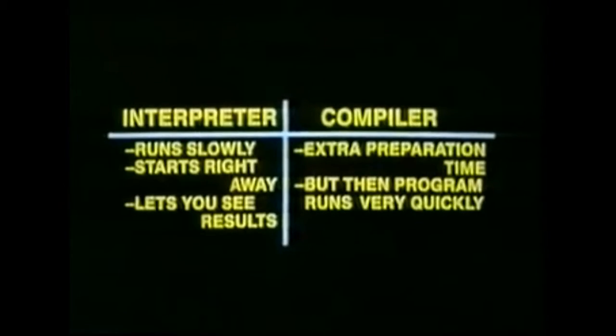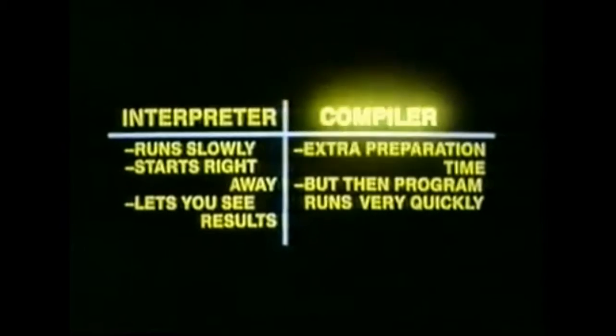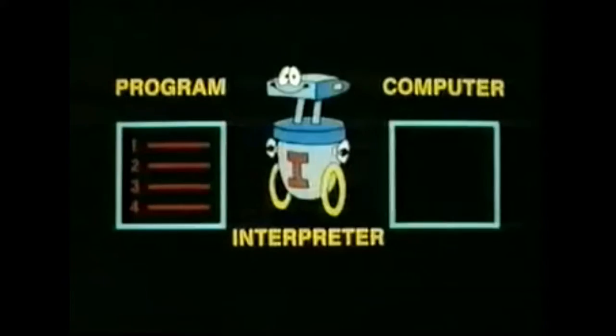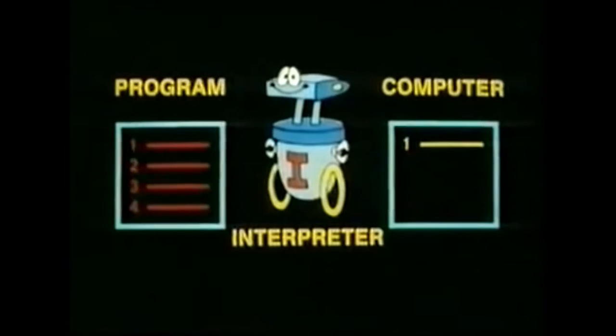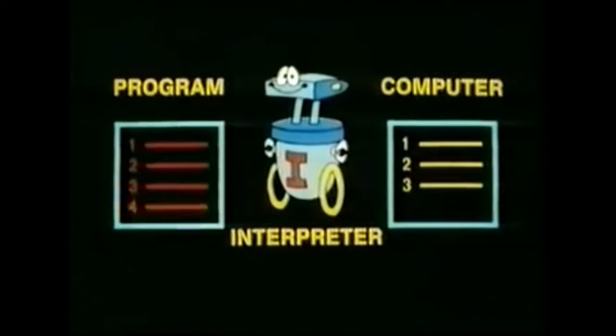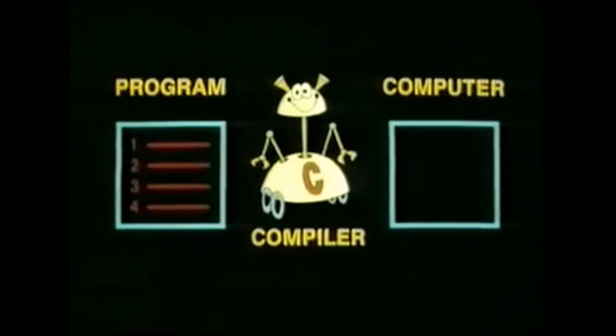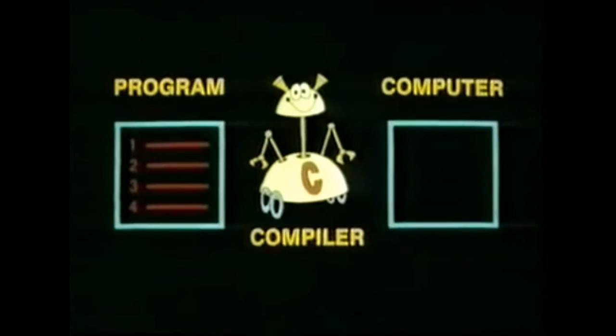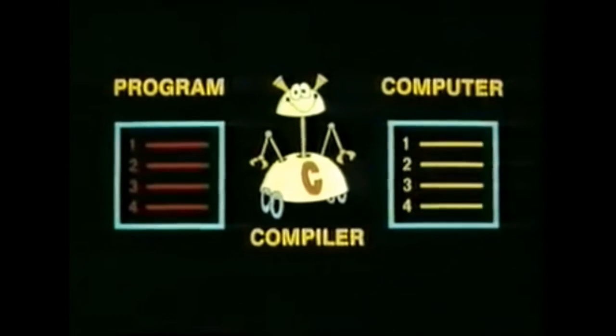To help you remember the difference between an interpreter and a compiler, look at the words themselves. 'Inter' means between — the interpreter is always between your program and the computer, and it translates line by line. To compile, on the other hand, means to pile together — a compiler piles together your entire program and translates the whole thing all at once.